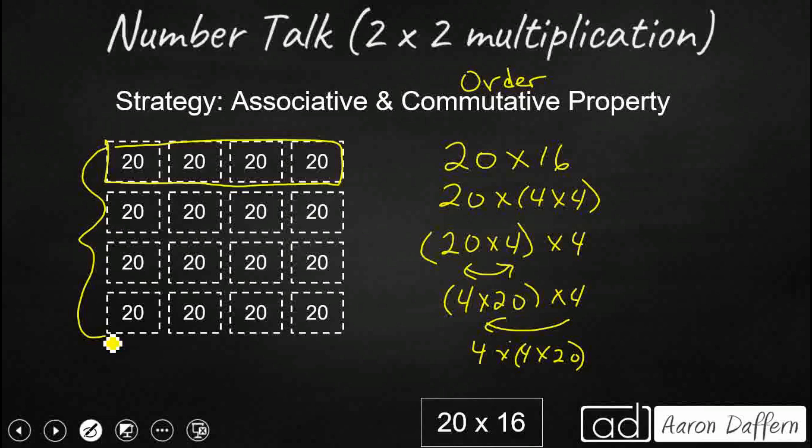And then I want to do one more because I want to have 4 groups of 4 groups of 20. And that's what I've got right here. 4 groups of 4 groups of 20. So, once again, I'm going to get back up to my 80. And I'm going to skip count by 84 times. 160, 240, 320.